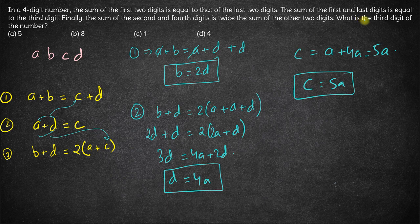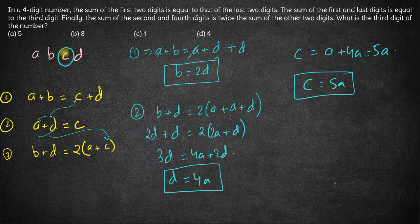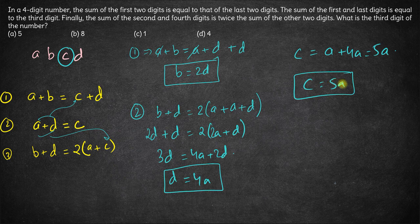Now the question is what is the third digit of the number? Third digit is C. Now third digit has to be a multiple of 5. This is 5 into A, right, and A is a single digit integer.